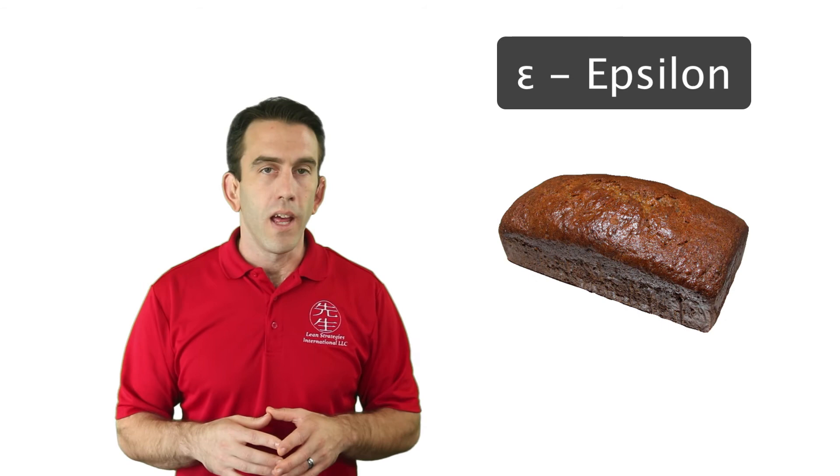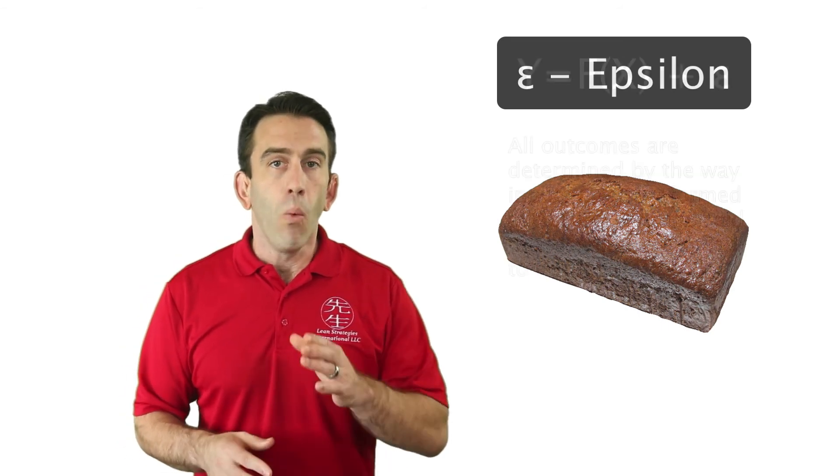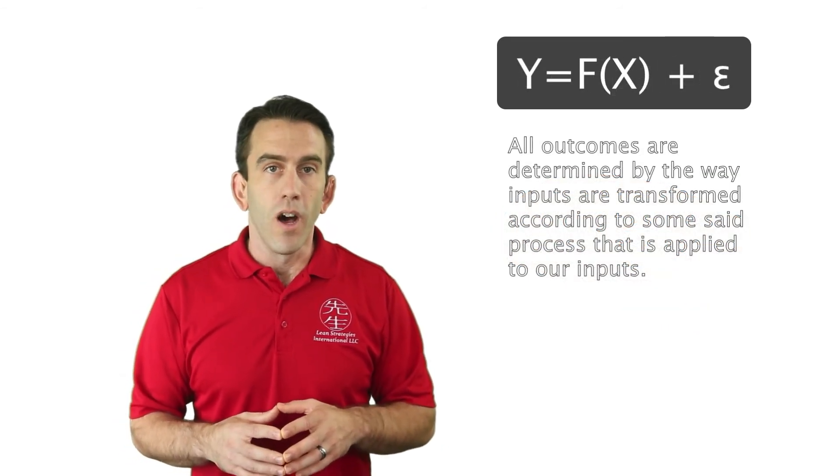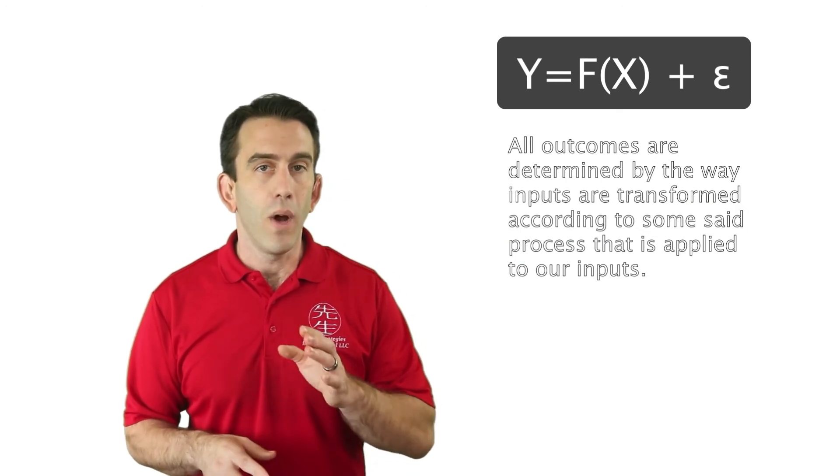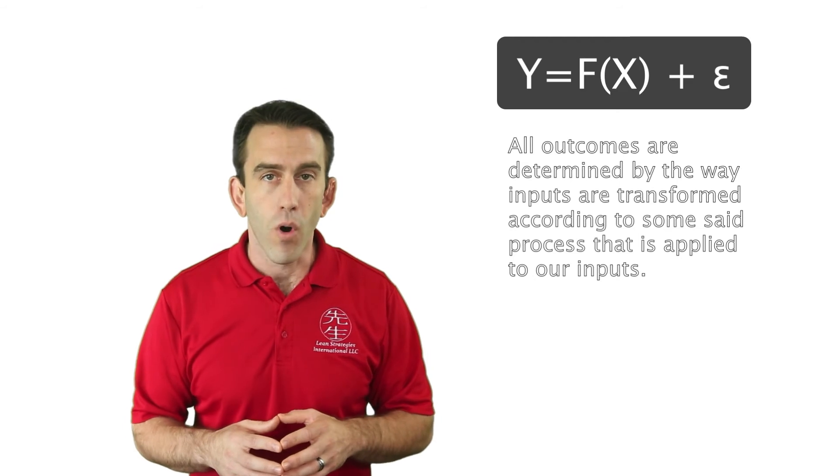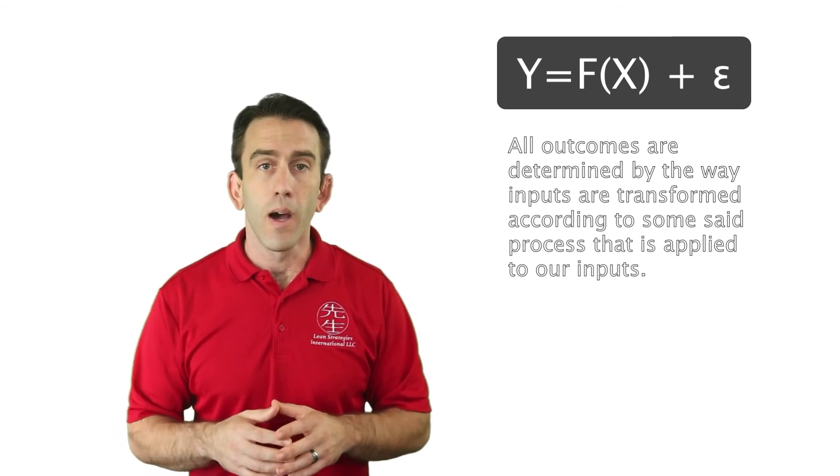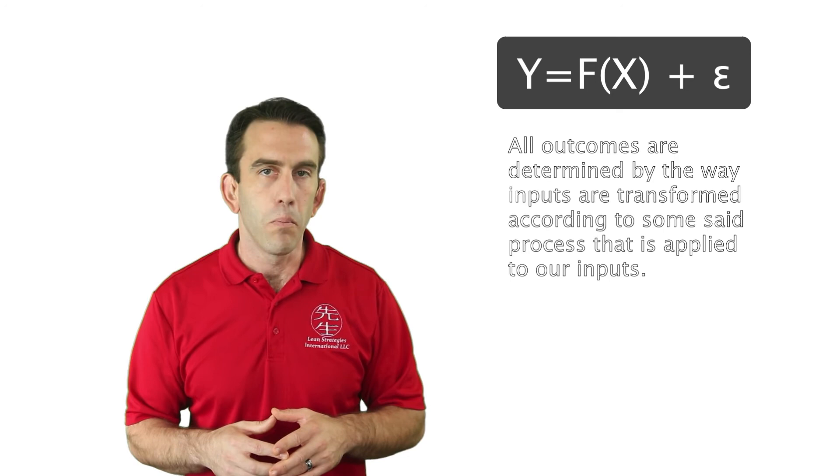Y equals F(X) plus epsilon tells us that all outcomes are determined by the way the inputs are transformed according to some said process that is applied to our inputs.